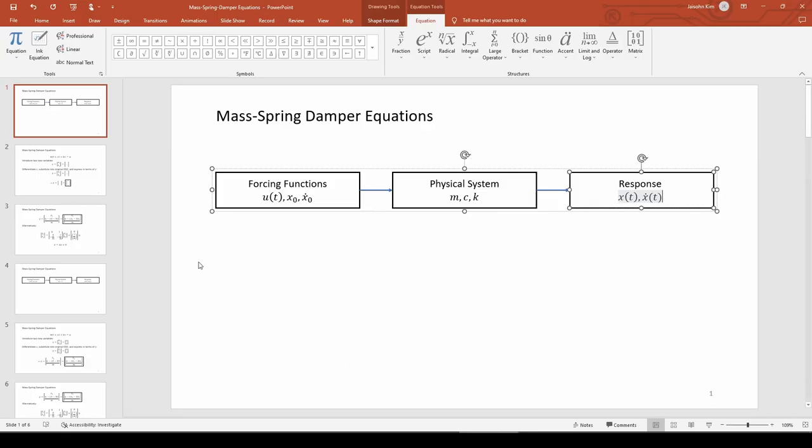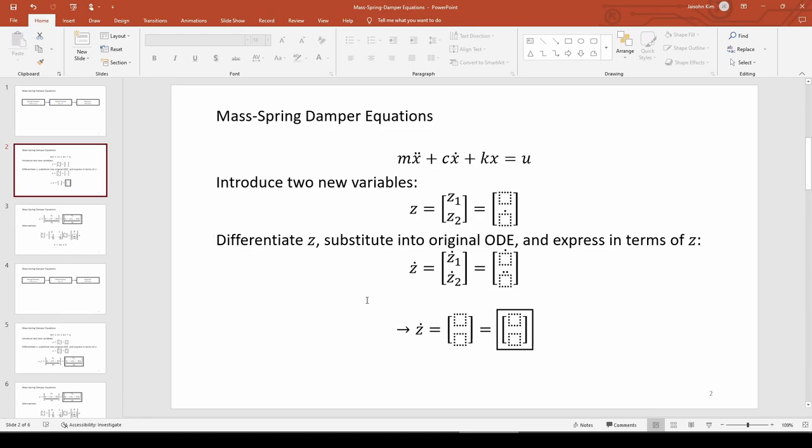The way we typically do so is by introducing some new variables which represent the lowest order derivative, all the way up to one less than the highest order derivative. In this case, the highest order derivative is 2, so we will use two variables, z1 and z2, which will represent x and x dot, respectively.